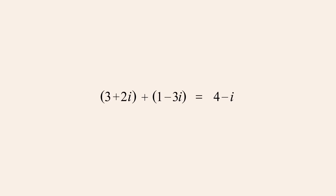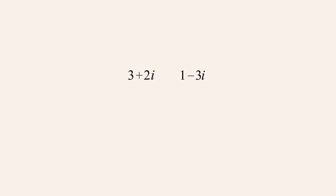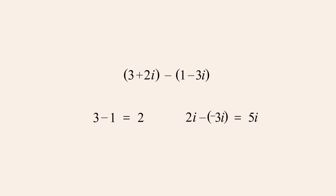The subtraction of complex numbers is accomplished in the same way, subtracting the real parts and the imaginary parts. So to calculate 3 plus 2i minus 1 minus 3i, we subtract their real parts and subtract their imaginary parts, giving us the result 2 plus 5i.